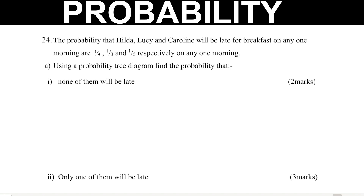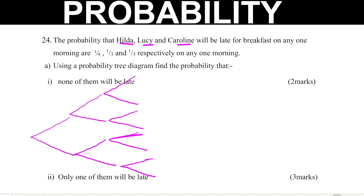We're supposed to use a probability tree diagram to find the probability that none of them will be late. Since we have 3 people — Hilda, Lucy, and Caroline — we shall have 3 branches. I'll use H for Hilda, L for Lucy, and C for Caroline.